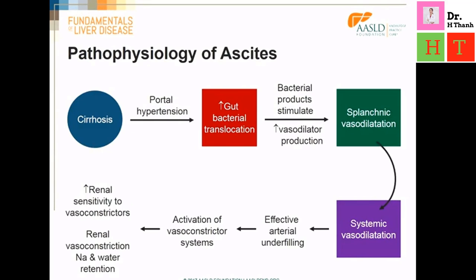Why does ascites occur? In patients with cirrhosis, there is distortion of liver architecture, leading to obstruction to portal flow and portal hypertension. As a result, there is increased translocation of bacteria from the gut lumen into the splanchnic circulation. Many of the bacterial products have vasodilatory properties. In addition, obstruction to portal flow increases shear stress on the splanchnic vessels, leading to the production of vasodilators.